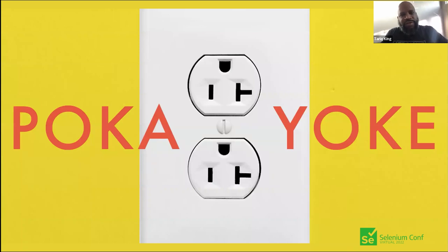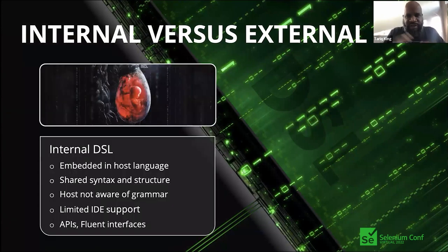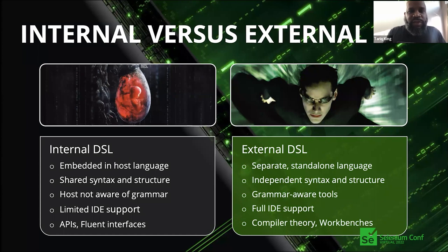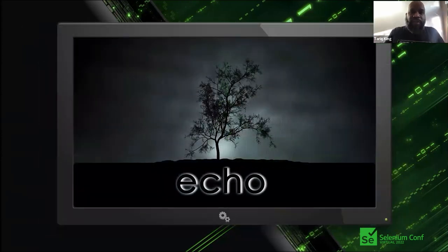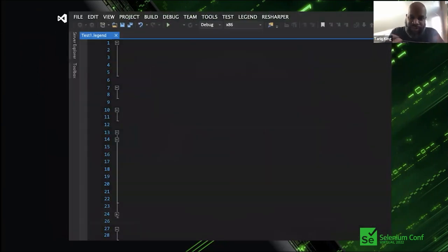We asked: what if we could go further? Inspired by the Japanese concept of poka-yoke — mistake proofing — could we build it so people physically can't make those mistakes? That led us to think about internal vs. external DSLs. An internal DSL embedded in the host language opens up too much freedom, whereas an external DSL with independent syntax gives full control, throwing compiler errors for disallowed patterns.